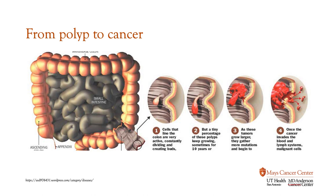The first step of polyp formation — we have lots of dividing cells in the colon, and over time it can create buds or polyps. You can see how they start very small, or even pedunculated, as we would call it. Over time, even up to 10 years, the polyps can grow, and as they become larger they start to have more mutations and begin to invade through the wall of the colon. If that's not removed in time, the cancer can spread to other organs by sending off cells into the blood or the lymphatic system — those are called malignant cells. So if we can remove polyps while they're still very small, we can prevent colon cancer.